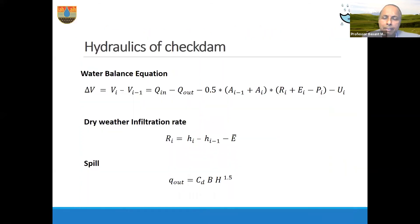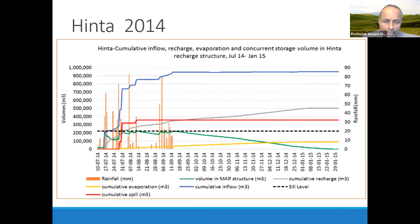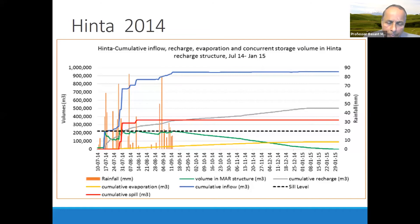We developed simplified science based on this data, understood the water balance, and published it in international journals. This means we don't need to be very complicated — we can use local data. We don't always have all the resources or background information we need, but we can work with whatever we have, including limited historical data or limited resources. This is a good example of how we can get insights and understanding of what is happening.